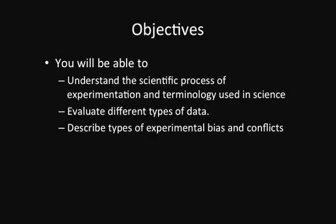You should be able to evaluate different types of data — both qualitative and quantitative — and also describe experimental bias and some conflicts. As scientists, we need to do our best to prevent these conflicts from coming up in our experiments so that we can give out accurate results that are useful to society.